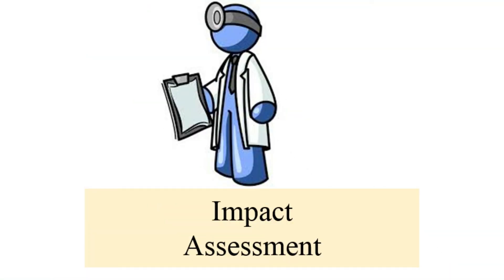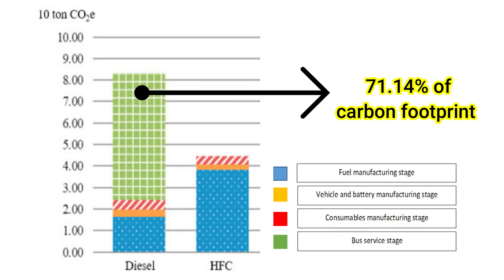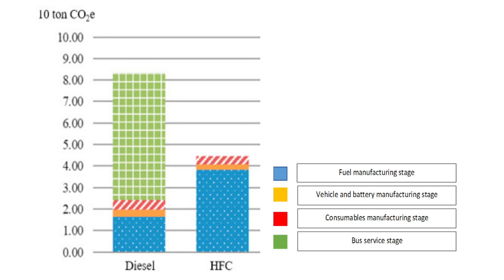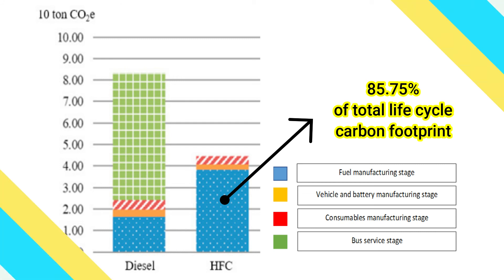Thirdly, LCIA shows that diesel buses contribute 71.14% of carbon footprint in the bus service stage. However, HFC buses release abundant greenhouse gases at the fuel manufacturing stage, with carbon emissions accounting for about 85.75% of total life cycle carbon footprint.